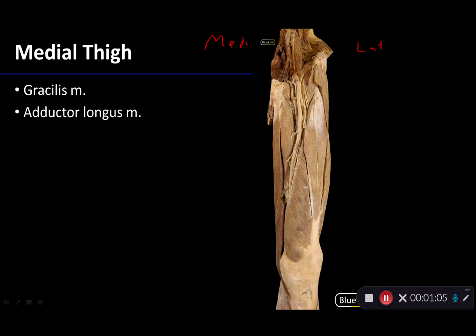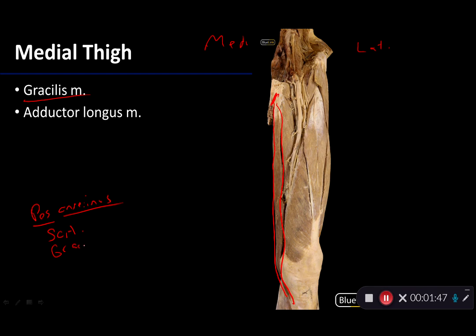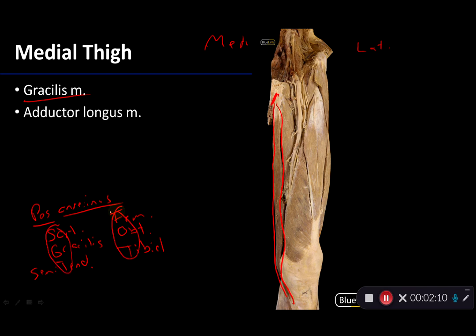The first muscle I would draw your attention to is this very long and elegant beauty — this is the gracilis muscle, named because it is gracile. It takes its proximal attachment from the body and the ramus of the pubic bone, and its distal attachment on the pes anserinus, or the goose's foot. Recall the pes anserinus is the attachment for the sartorius muscle, the gracilis muscle, and the semitendinosus muscle. They are innervated by the femoral nerve, the obturator nerve, and the tibial division of the sciatic nerve — giving us our 'Sergeant' mnemonic.